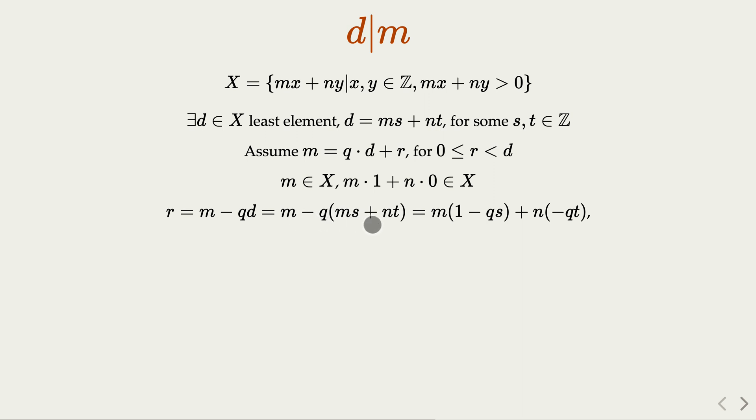So we can plug in for the d value, and we're going to combine m and m here. So it's m times some integer here, n times another integer.